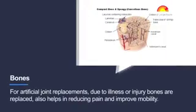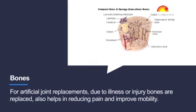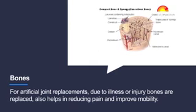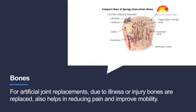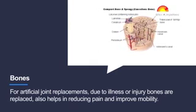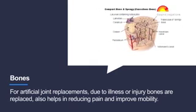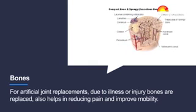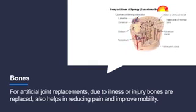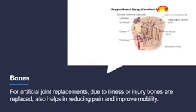Bones: bones are used for artificial joint replacements due to illness or injury. Bone replacement also helps in reducing pain and improving mobility.